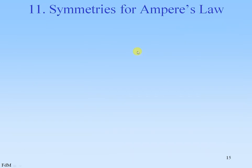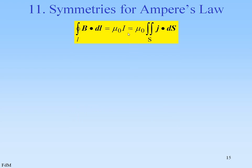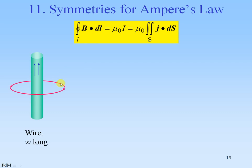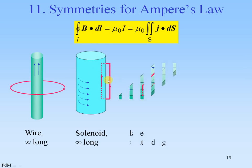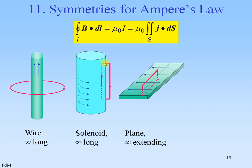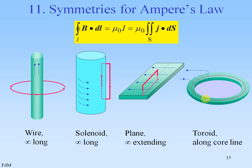All together, we have the following symmetries for Ampere's law. The circulation of B over the circuit is mu-naught times the current density integrated over the surface enclosed by that circuit. Here we have the symmetry for the wire, for the solenoid, for a plane with a similar rectangle as the solenoid — because a large solenoid can be considered as consisting of planes — and a toroid along the core line.